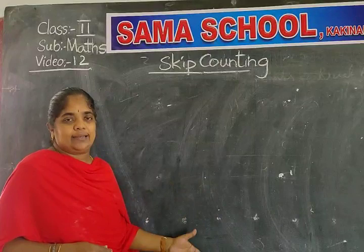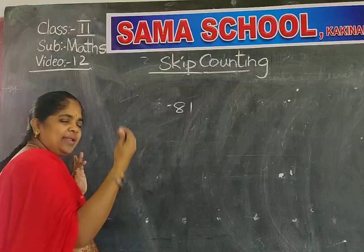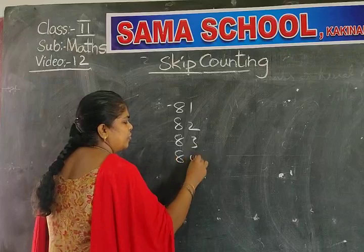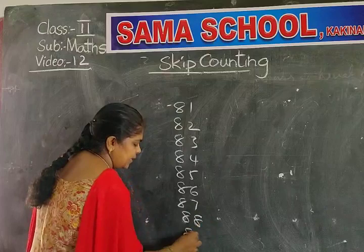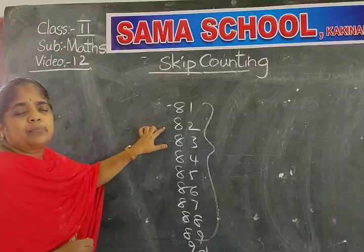Suppose we start at 81. Normally we will write 82, 83, 84, 85, 86, 87, 88, 89, 90. Like that we will write. We won't leave any number in the middle.